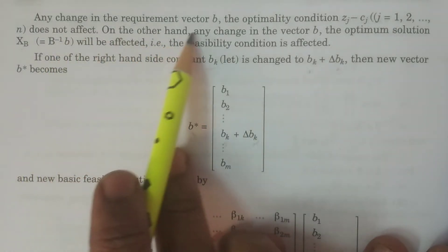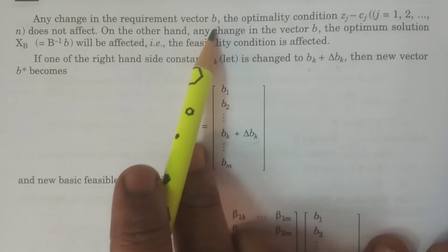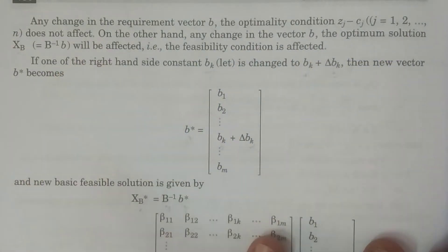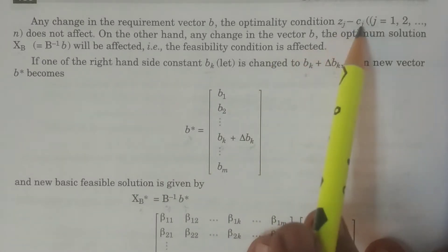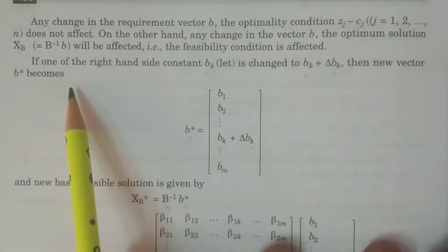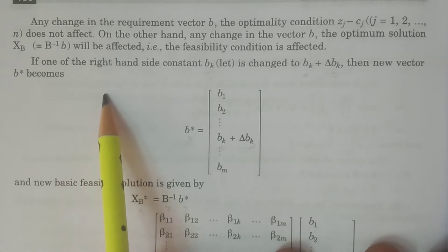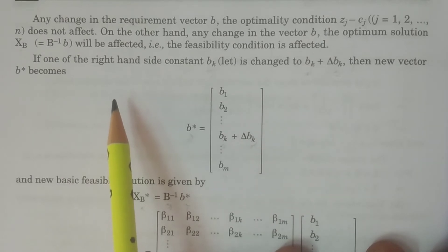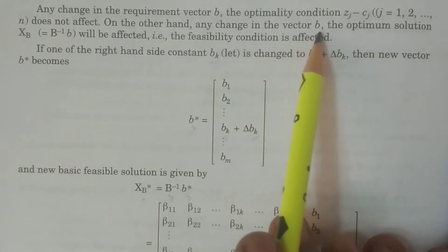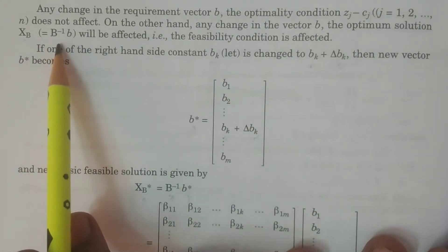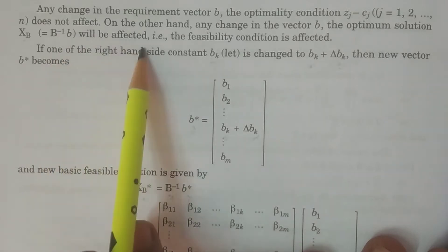Any change in the requirement vector b: what changes does it make to the optimality condition zj − cj for j = 1 to n? It does not affect the optimality condition. Why? Because the formula zj − cj = cB·yj − cj does not involve b on the left-hand side. However, it does affect the optimum solution xb = B⁻¹b, which will be affected by changes in b.